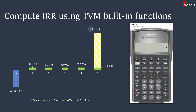The last input is the future value of four million dollars. Enter four million and click FV. Now compute IY, which is the interest rate or discount rate that equates the present value of future cash flows to the initial outlay. The result is 26.77%, which is the project's internal rate of return.